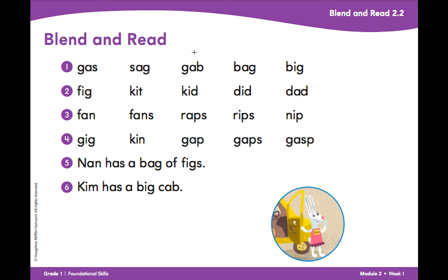Let's look at the sentence in row five. Read it with me now. Nan has a bag of figs. Now let's read the sentence in row six. Kim has a big cab.